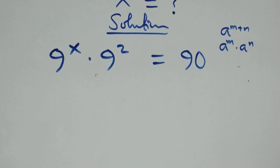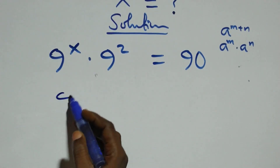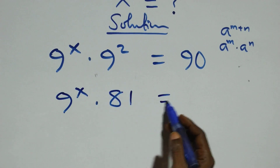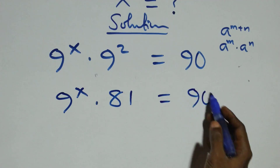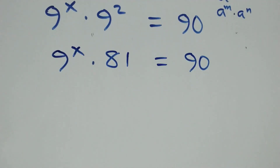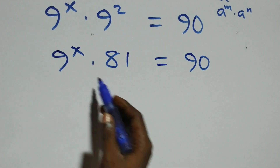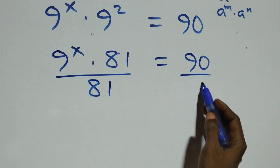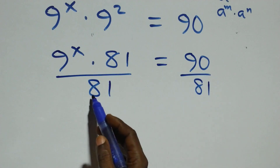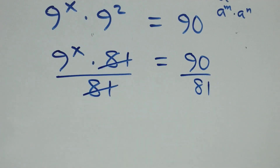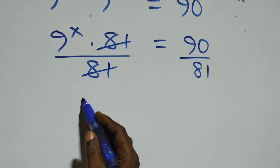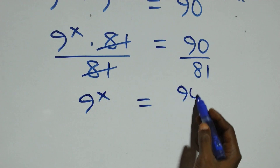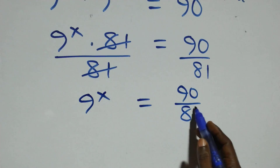This can be written as 9 raised to power x times 9 squared. Nine times nine is eighty-one, so 9^x times 81 equals 90. The next step: we divide both sides by 81. Eighty-one cancels with each other, and we have 9 raised to power x equals 90 over 81.